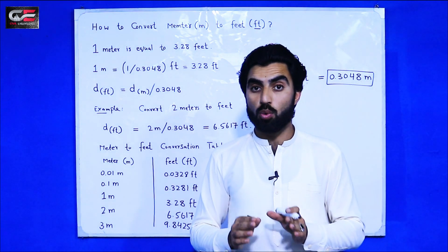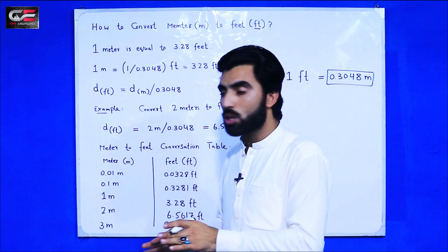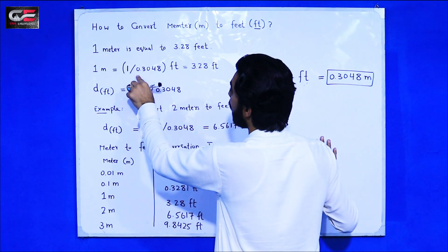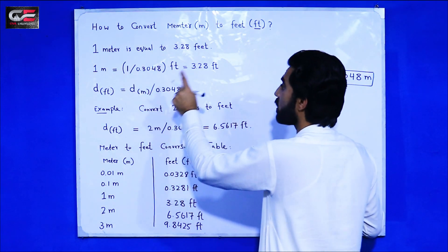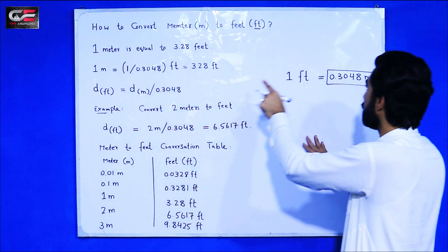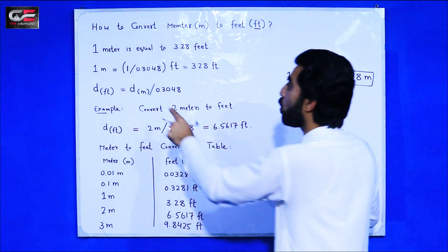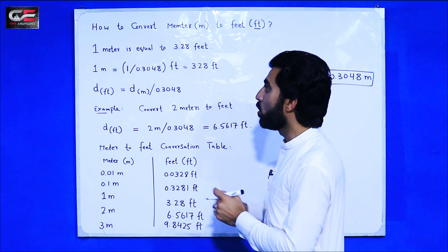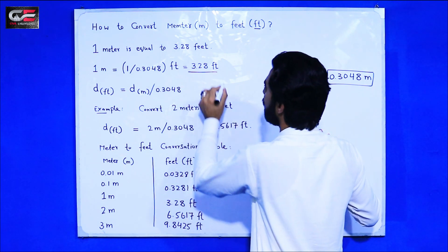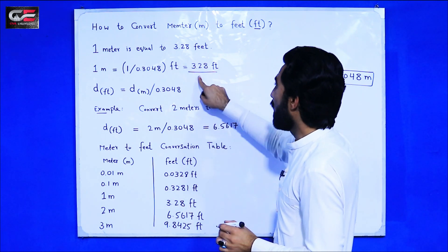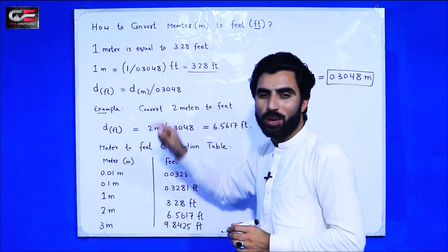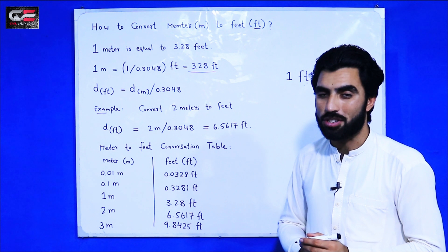Now if you need to convert meter to feet, how can you convert? Then 1 meter is equal to 1 meter divided by 0.3048. So when you divide 1 by 0.3048, it will give us feet. So now in 1 meter we have 3.28 feet. When you divide 1 by this number you will get the number of feet in 1 meter. This is the formula.